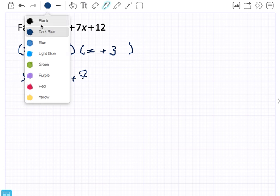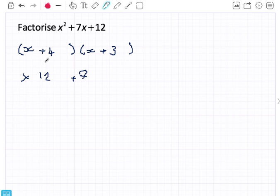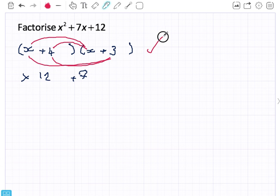x times x gives me x squared and four times three gives me twelve. And x times three gives me three x and four times x gives me four x. So four x and three x give me seven x. So I know that I'm correct.